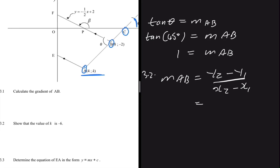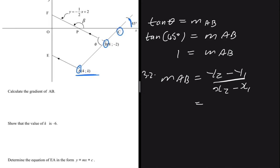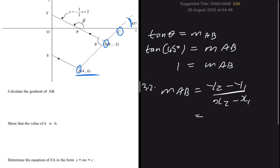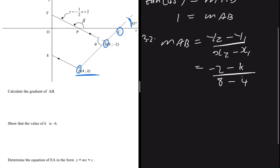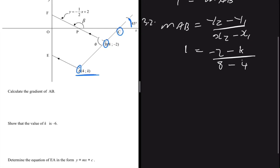We take B as point two and A as point one — you can do it the other way and it still works. The y-coordinate of B is minus 2, so we have: minus 2 minus k (the y-coordinate of A), all divided by 8 minus 4 (the x-coordinates of B and A respectively). We know the gradient of AB is 1.